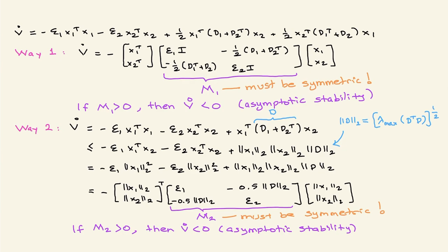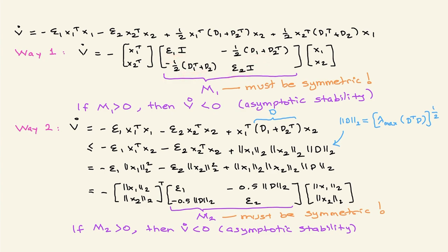I will now establish sufficient stability conditions for each of the four ways, and then do a numerical example to compare them. For Way 1: if M1 is symmetric and its eigenvalues are all positive, then M1 is positive definite. So if epsilon1, epsilon2, d1, and d2 are such that M1 is greater than zero, then you have asymptotic stability for Way 1.